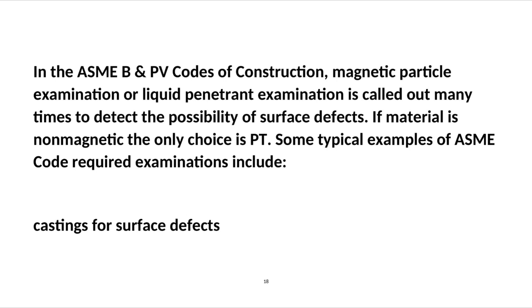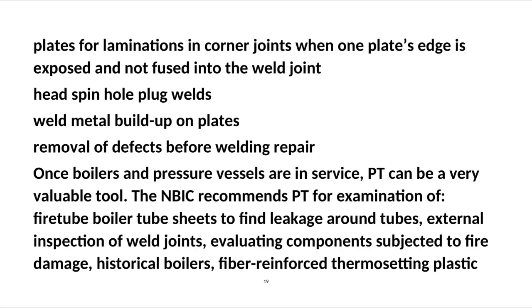In the ASME B&PV codes of construction, magnetic particle examination or liquid penetrant examination is called out many times to detect the possibility of surface defects. If material is non-magnetic, the only choice is PT. Some typical examples of ASME code-required examinations include: castings for surface defects; plates for laminations in corner joints when one plate's edge is exposed and not fused into the weld joint; head spin hole plug welds; weld metal buildup on plates; and removal of defects before welding repair.